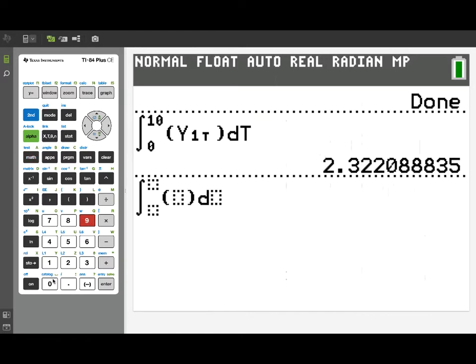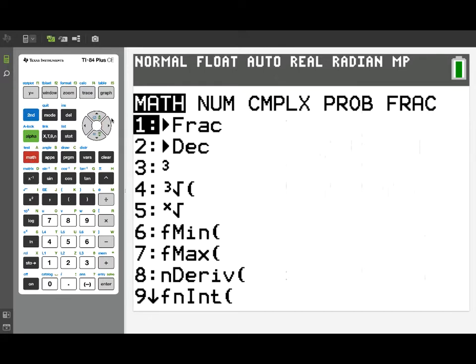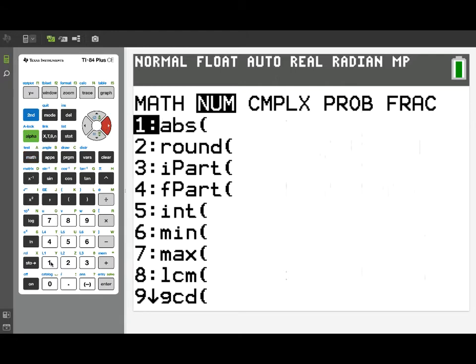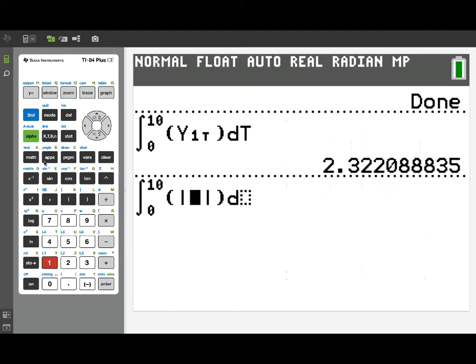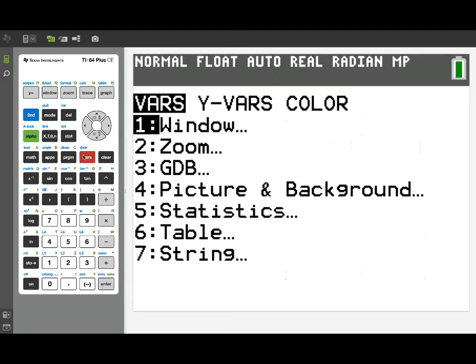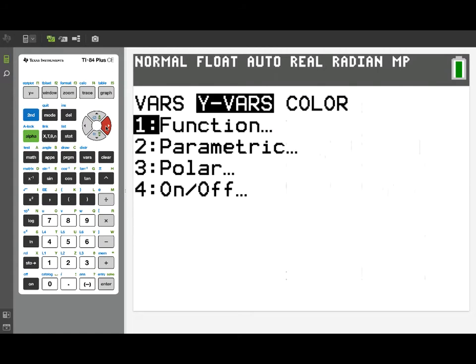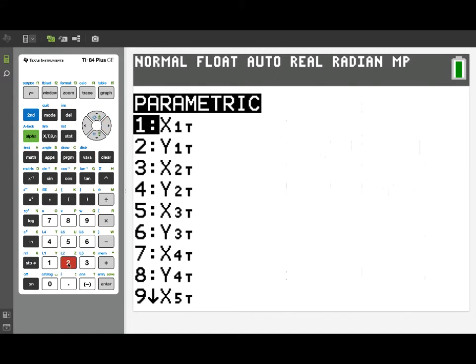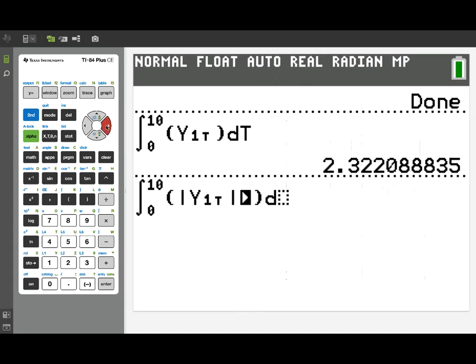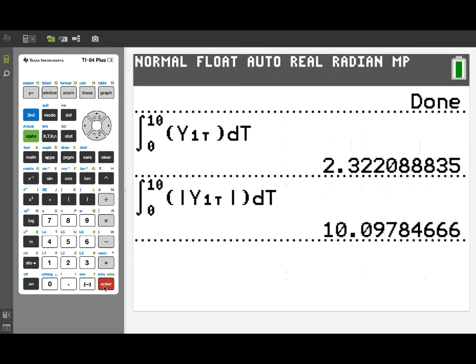Now in contrast, suppose we integrated from 0 to 10 the absolute value of our velocity. What this is is going to be integrating speed over the interval, and that should give us the entire distance that the object traveled going in either direction along the way. So I've gotten the absolute value signs off my math menu. Now we'll take the absolute value of our y1 of t, and then we'll integrate with respect to t, and this should give us the total distance that the object traveled. And we end up with around 10.098.